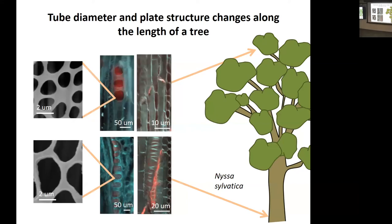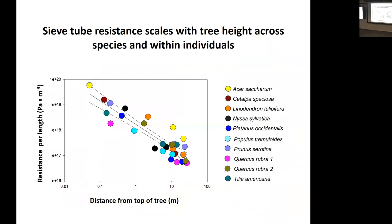Here's what some of the data looks like. This is resistance plotted against distance from the top of the tree. At the base of the tallest trees, resistance is lowest; as you move toward the top of trees and toward shorter trees, resistance gets higher. The relationship within a plant, within a species, appears to be the same as across species — a pretty constant scaling relationship between resistance and height, which is really exciting.